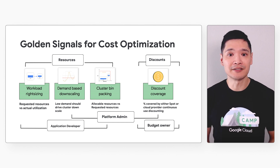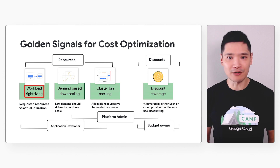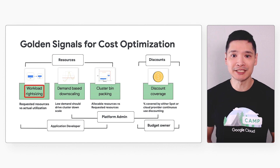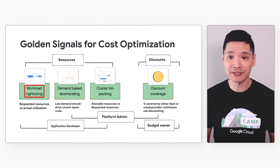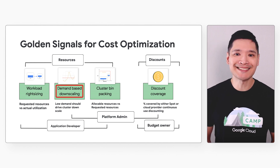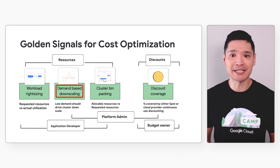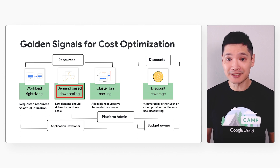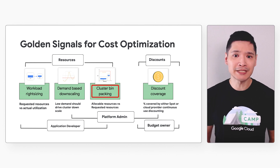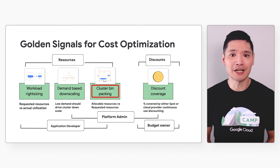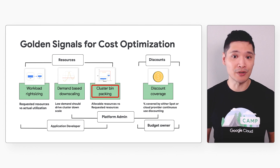The first signal in the resources category is workload rightsizing. This is all about comparing requested resources to actual utilization, so that we can make sure we aren't overprovisioning our resources. The second signal is off-peak hours. During times of day where traffic to your application is lower, your GKE cluster should scale down appropriately. Third, there's bin packing — here we'll take a look at whether you're requesting the appropriate machine type and properly packing your pods deployed in your environment.